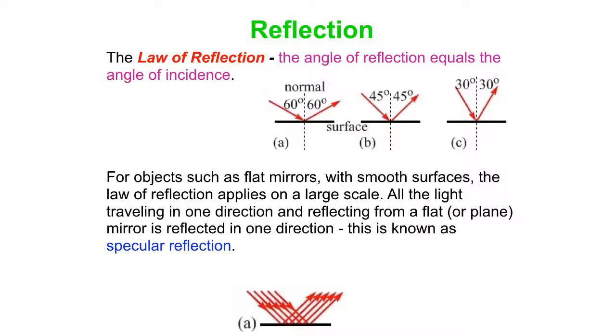Now, objects that are very flat, like mirrors, then the law of reflection applies on a large scale. So you can see this in the picture. All the light comes in a particular direction, and then it all goes off obeying the law of reflection on a large scale. That's what we call specular reflection.